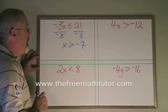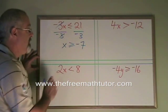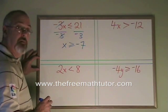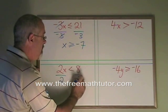Let's look at another example. 2x is less than 8. My x is being multiplied by a 2, so I divide both sides by a 2.